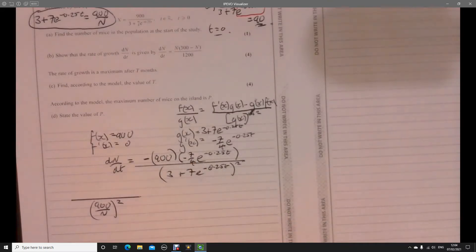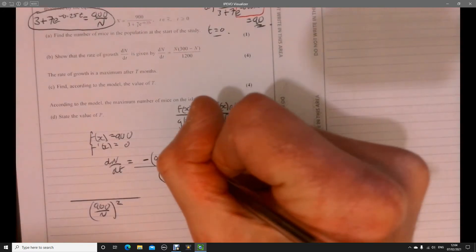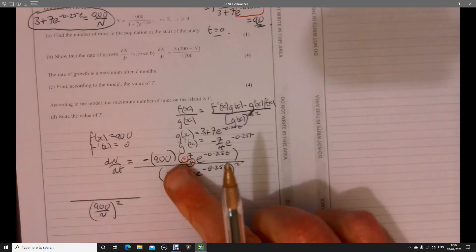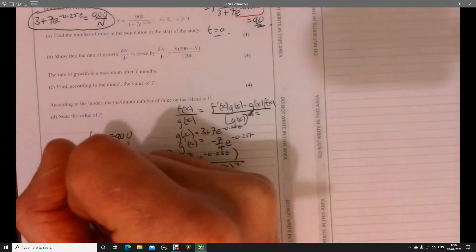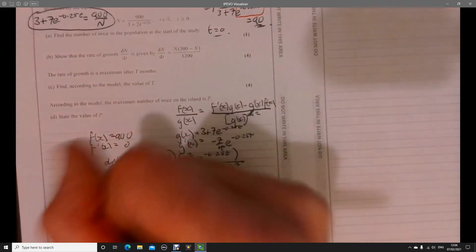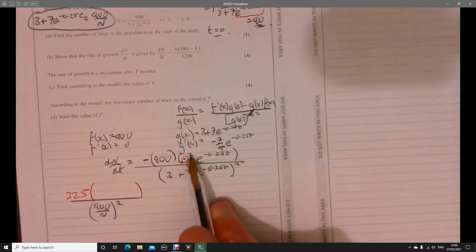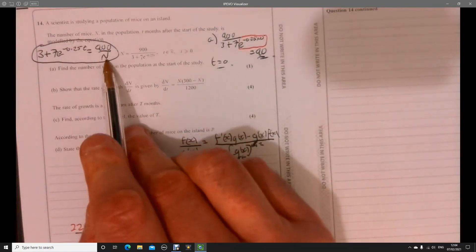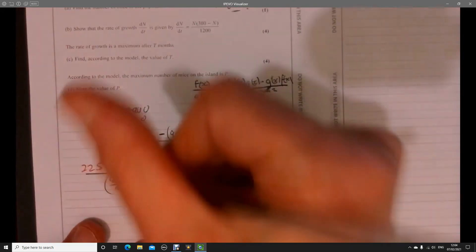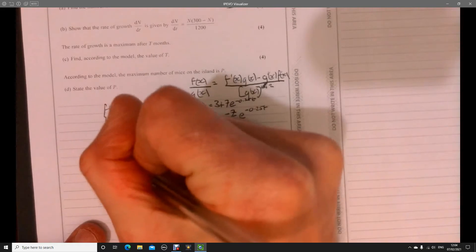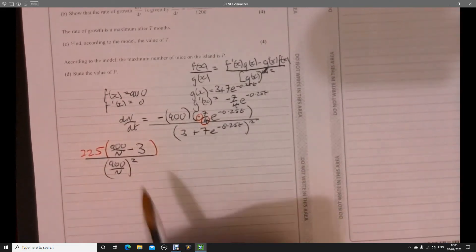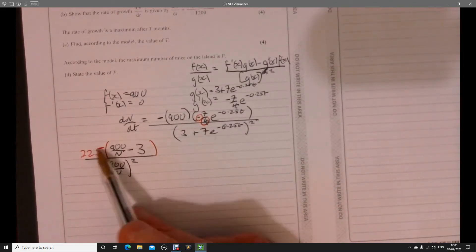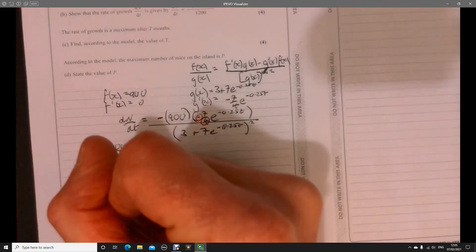Now I'm going to start thinking about what I've got up here. I would prefer that 4 and that minus not to be there. If I take them outside, I'm just going to have 225 at the front. Now I'm thinking, what's 7e to the minus 0.25t? It's just going to be this take away 3. So we had 900 over n take away 3. That n is going to pop up there, although it's going to be n squared.